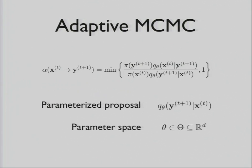Let's start with the setting of Adaptive MCMC. We have the Metropolis Hastings algorithm with a target distribution and a parameterized proposal, where your parameter space is in R^D. The performance of our sampler often depends a lot on the parameter settings for that distribution.